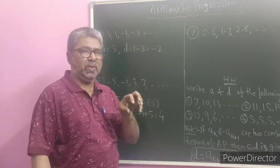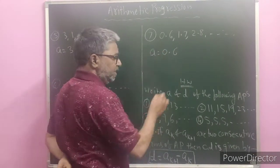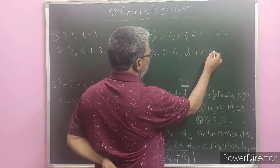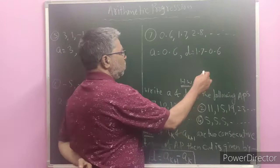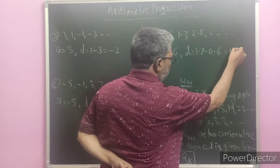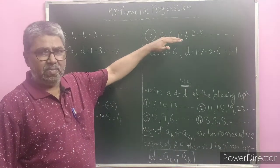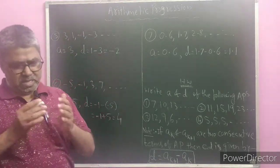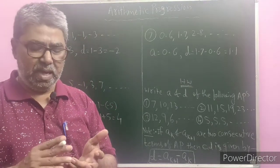Coming to one more example which is in the form of decimals. A here is 0.6. Then D is equal to 1.7 minus 0.6. If you subtract 0.6 from 1.7, you get 1.1. So 1.1 is the common difference of this arithmetic progression whose first term is 0.6. In this way, these are a few examples where we find the first term and common difference.